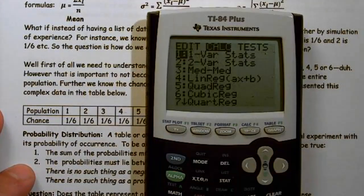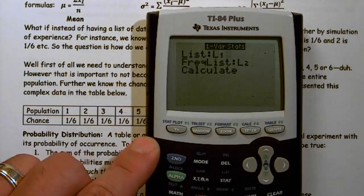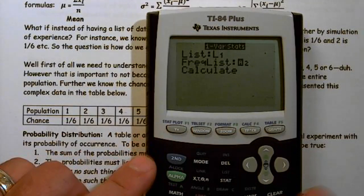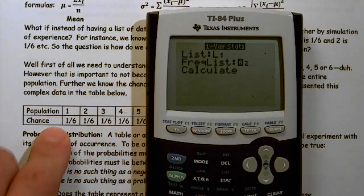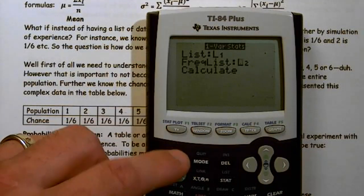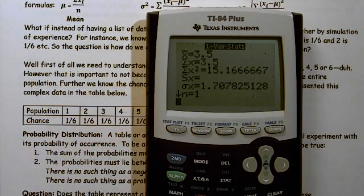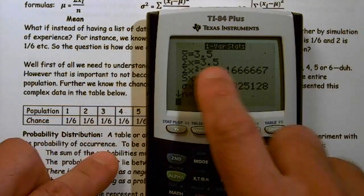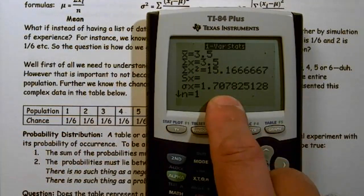So now that I have that in there, I'm going to go to stat calc, one variable statistics. My data list is in L1. My X is in L1. And I do have a frequency. So I need to make sure I have my frequency on, which in this case, my frequency is the probability or how many occurrences. So second 2. And I end up getting a mean of 3.5 and a standard deviation of 1.7078.